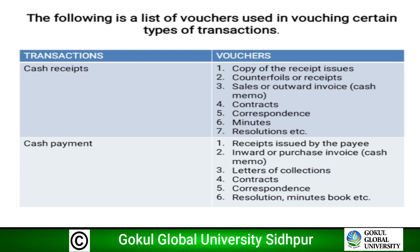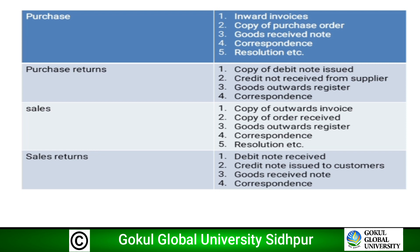The second transaction is cash payments, and the vouchers included are: receipts issued by the payee, inward or purchase invoice, letters of collection, contracts, correspondence, resolution, minute book, etc. The third transaction is purchases, and included vouchers are inward invoices, copy of purchase order, goods received note, correspondence, and resolutions.